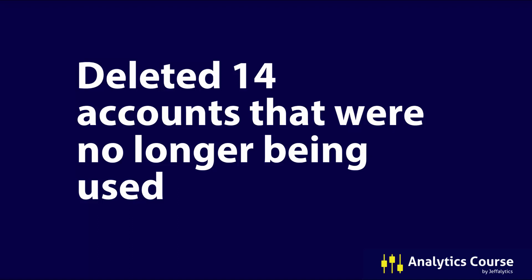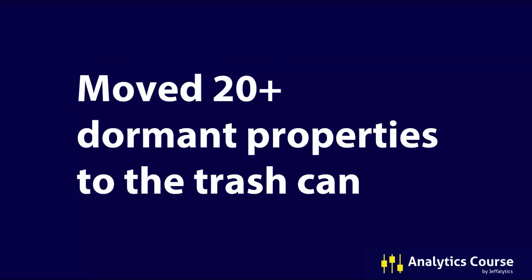I deleted 14 Google Analytics accounts that were no longer being used. They were dormant, collecting dust. The only traffic in these accounts for the last two or three years was traffic from bots — so these are gone. I also moved 20-plus dormant properties to the trash can, meaning I got rid of tracking for several unique domain names or web properties I wasn't using. Now when I look through my accounts, I don't have to sift through junk — I go right to the areas I want, and those others are scheduled for deletion.